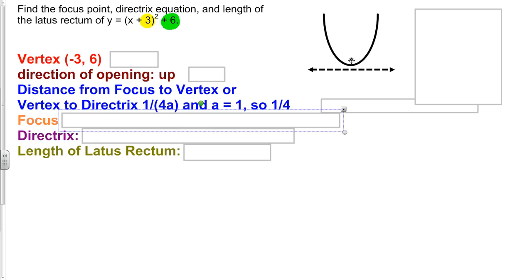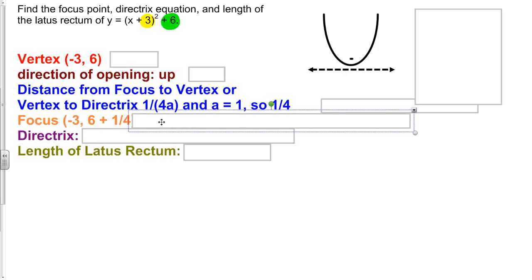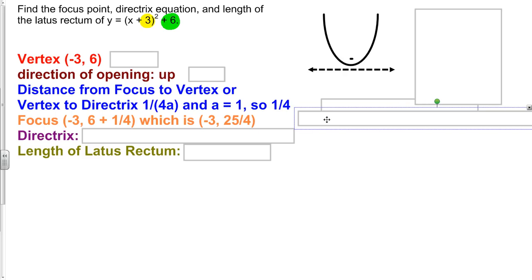If they're 1/4 of a unit apart, and we know our vertex, and they're up and down from each other, that means that we need to, in this case, look at our y value and add 1/4. So our focus, our x coordinate will stay the same. Our y coordinate, we add 1/4 to it, and that's going to give us the point negative 3, same as the vertex, and then 25/4, so just a little bit above 6.